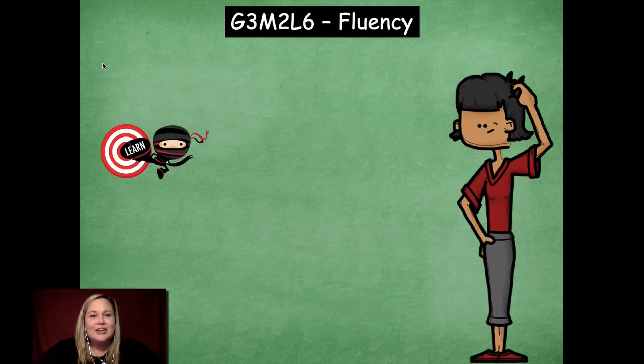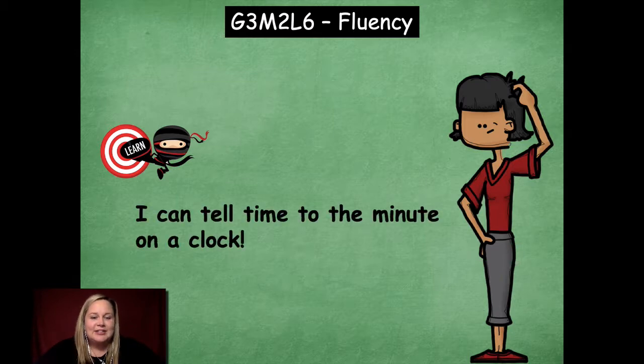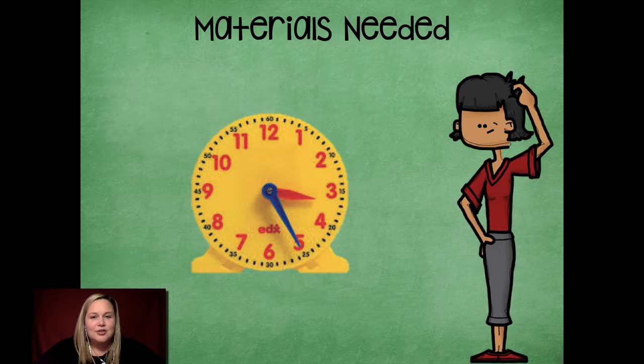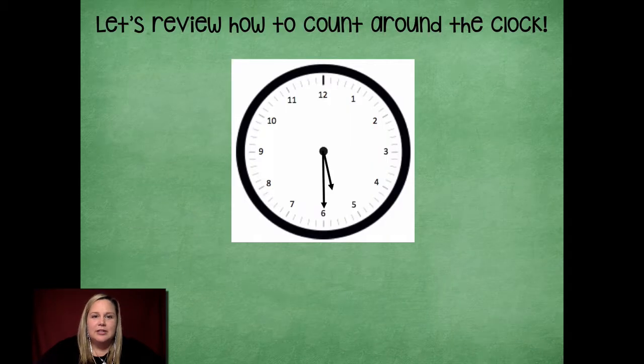Hi friends, it's Mrs. Walker. For today's fluency practice, we're going to talk about time. Our learning goal for today says, I can tell time to the minute on a clock. The materials that you're going to need are a clock. Make sure that you have one of these to be able to participate in our fluency activity. Okay, so let's jump in and get started.